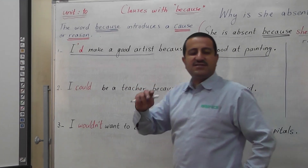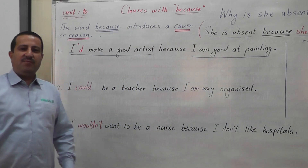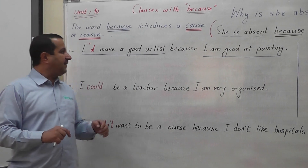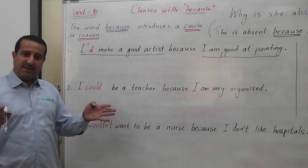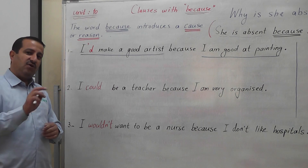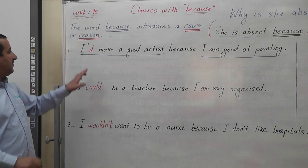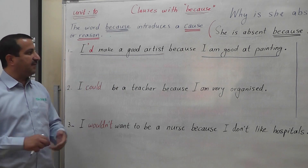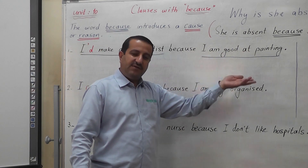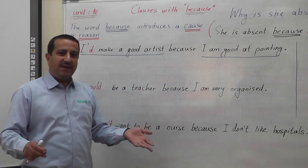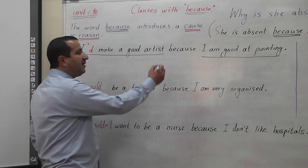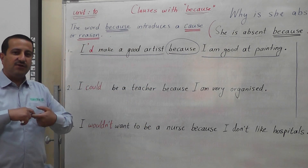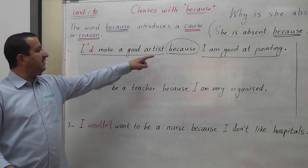Both clauses are independent clauses. When we say independent clauses, it means they have full meaning and they can stand on their own. For example, 'I make a good artist' is an independent clause — it has full meaning and stands on its own. So the word BECAUSE is a conjunction that connects two independent clauses together.